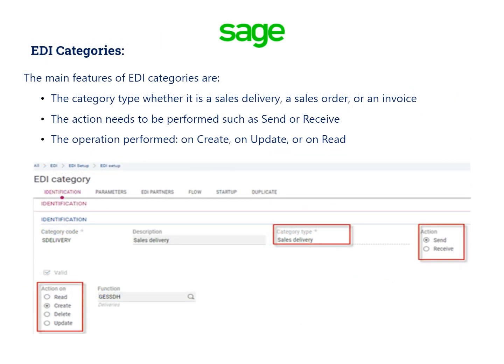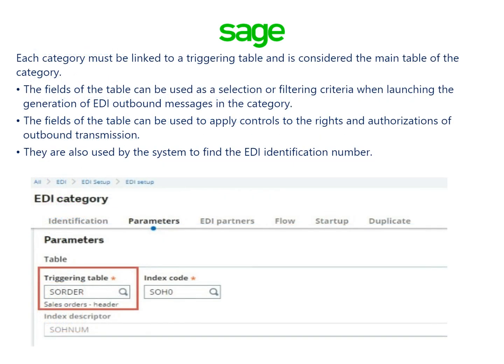The main features of EDI categories are the category type, whether it is a sales delivery, a sales order, or an invoice; the action to be performed such as send or receive; and the operation performed, whether on create, on update, or on read. Each category must be linked to a triggering table, which is considered the main table of the category. The fields of the table can be used as selection or filtering criteria when launching the generation of EDI outbound messages, to apply controls to rights and authorizations of outbound transmission, and to find the EDI identification number.